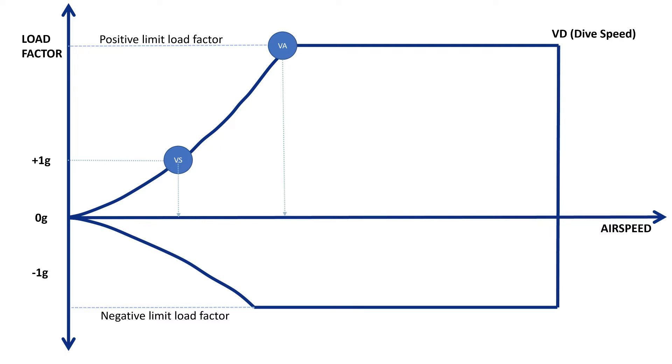Although I didn't mention them the last time, we can also see the respective speeds for negative G loads, namely the minus 1G stall speed and negative G manoeuvring speed.